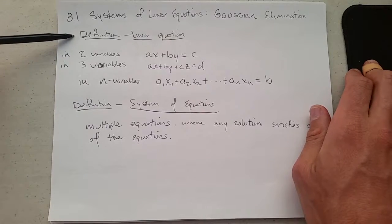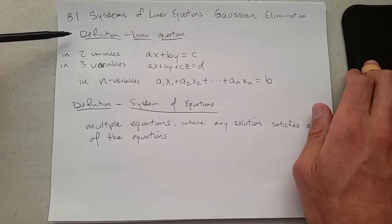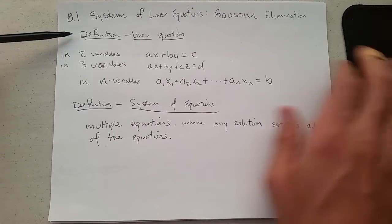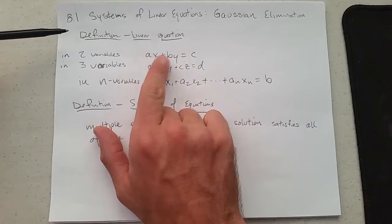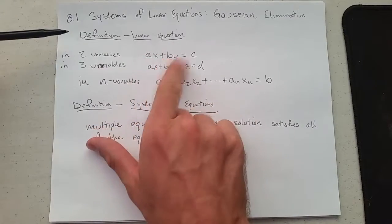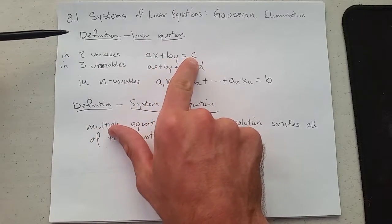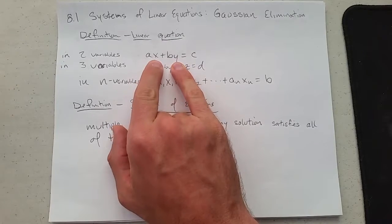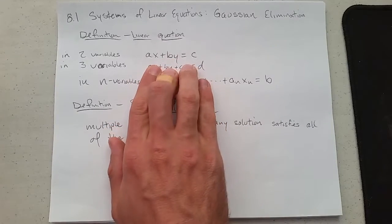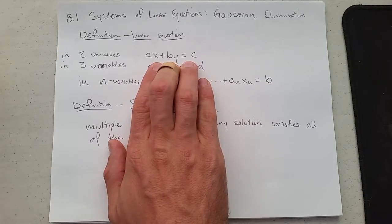We've seen this before with functions and they were based on equations. If we have two variables, linear equation is, here a and b are going to be numbers, constants, and c is also going to be a constant. The variables are x and y. So in two variables, here is what our linear equation looks like.